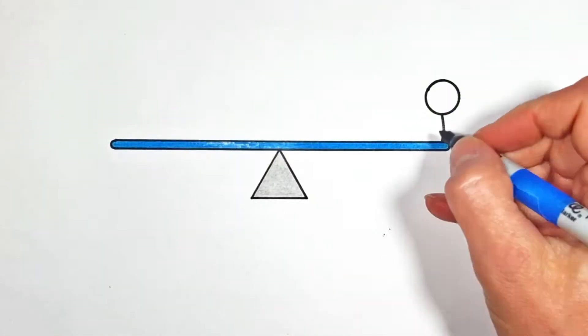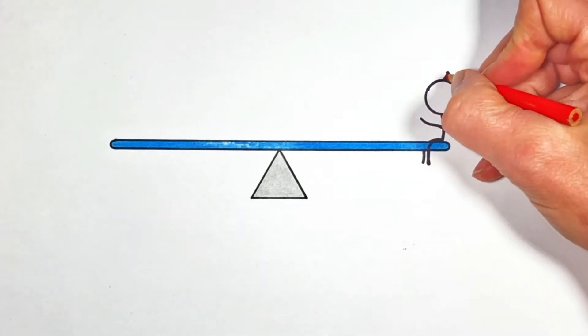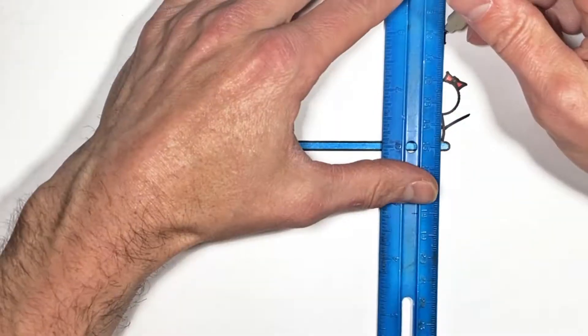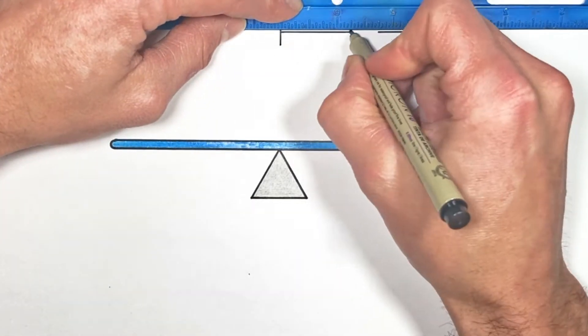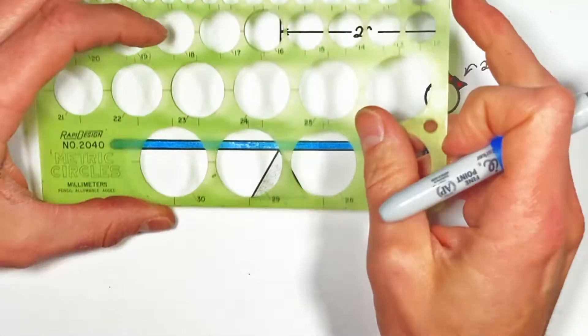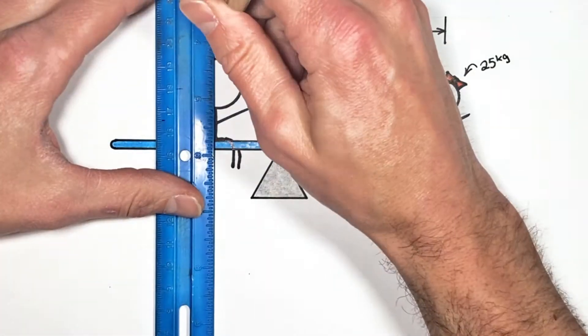Now on one side, we've got a tiny little 25kg person sitting 2 meters away from the fulcrum, or pivot point. And the question is, where do we put a 75kg person to balance out that seesaw?